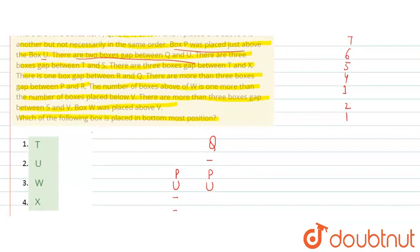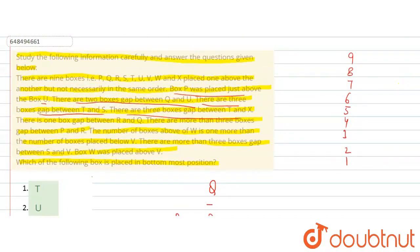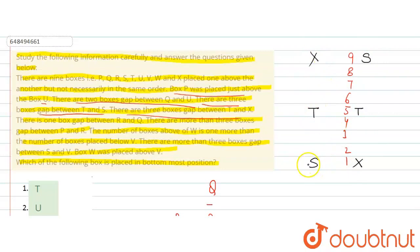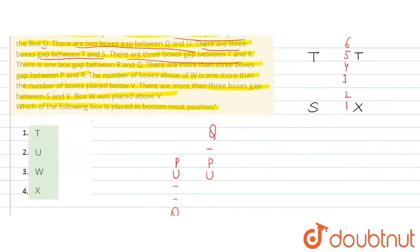Moving ahead, there are 3 boxes gap between T and S, and 3 boxes gap between T and X. So T comes here. In case 1, S is placed here and X here; in case 2, X is placed here and S here. So there is a 3-3 gap between them.